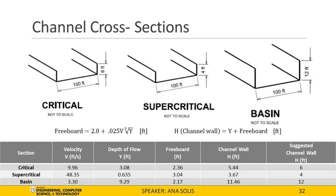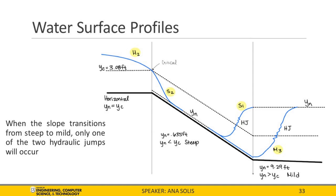The channel cross sections were determined for each section of the spillway by calculating the freeboard, which is a function of flow velocity and depth. The channel wall height is determined by adding the freeboard and flow depth. All three sections maintain a 100-foot base width: a 6-foot wall for the critical section, a 4-foot wall for the supercritical section, and a 12-foot wall for the basin to account for the hydraulic jump. Water surface profiles were drawn for each section. At the top, the slope is horizontal with a critical depth of 3.08 feet, producing an H2 curve. At the steepest section the curve transitions from H2 to S2. When the slope transitions from steep to mild, a hydraulic jump occurs producing either an S1 or M3 curve, where normal depth is greater than critical depth.